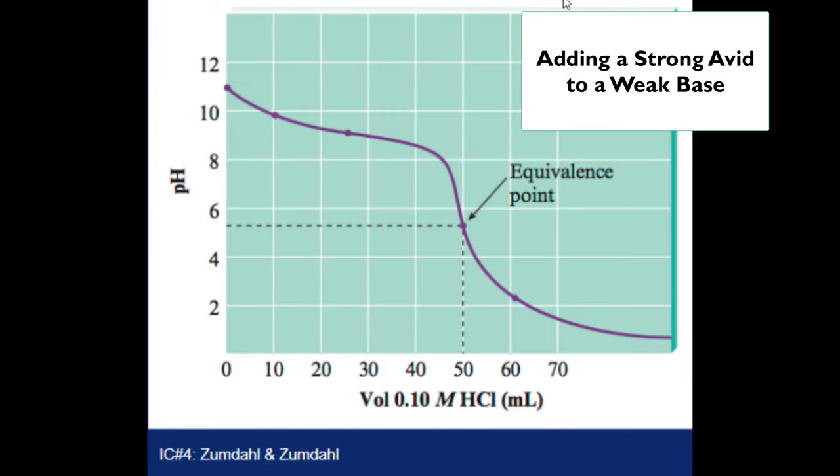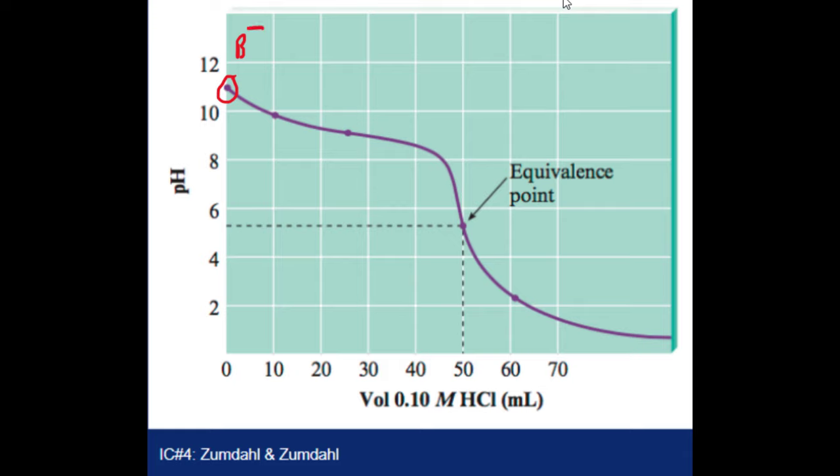The same holds true when you add a strong acid to a weak base. Here, you just have the base. So the pH would just be the pH of the base. And then as you add the strong acid, the pH drops pretty rapidly. But then it starts to level off again. This is the buffer zone. And as you see here, once again, they've reached the equivalence point at 50 milliliters. So the half equivalence point right here is where your pH will equal the pKa.